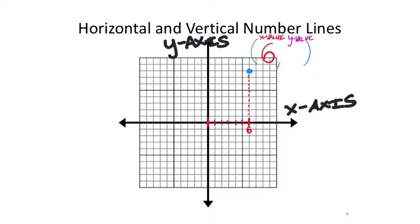For its corresponding y-value, I follow the street over until I get to the y-axis. What y-value is that? Starting at zero, I go up 1, 2, 3, 4, 5, 6, 7 — that's the eighth street. So you could say this is like sixth east and eighth north.